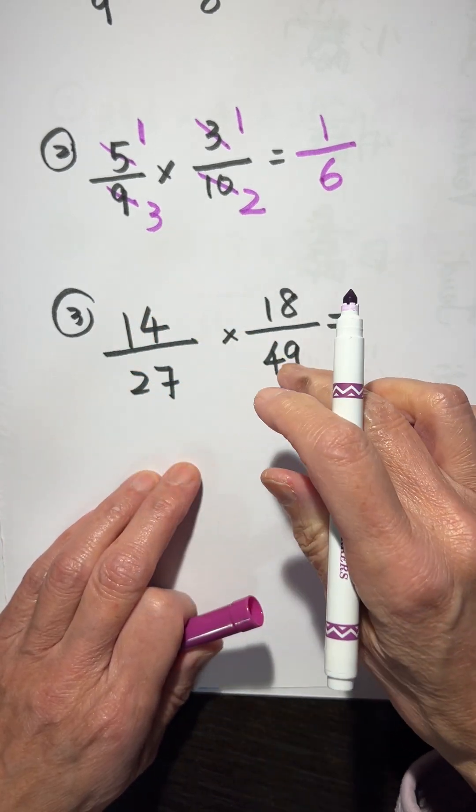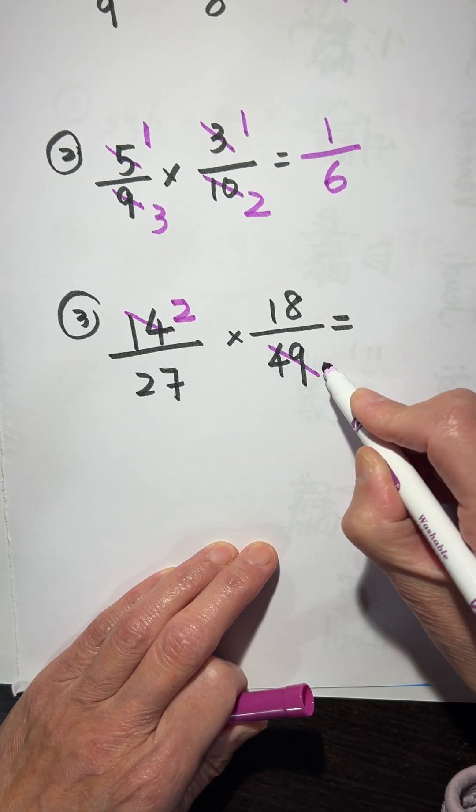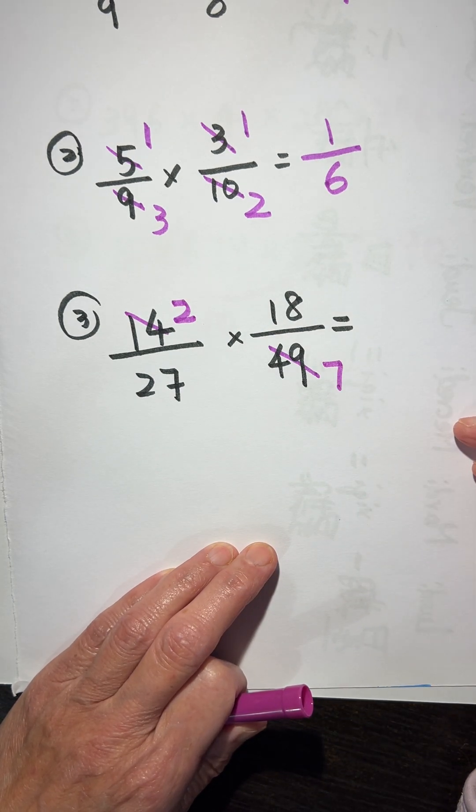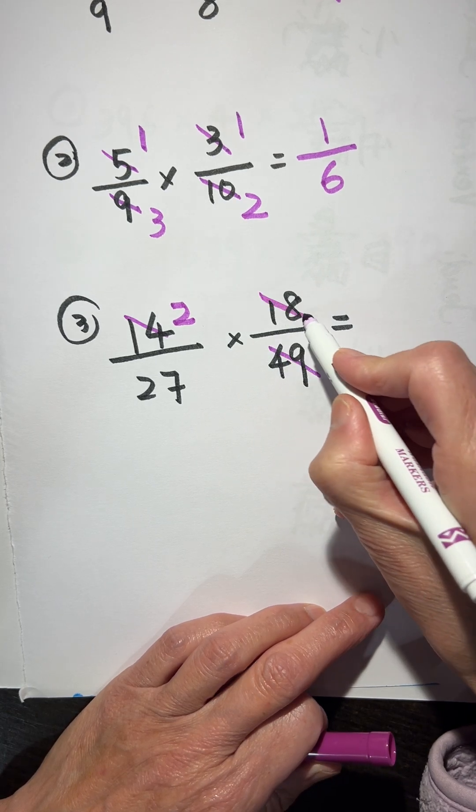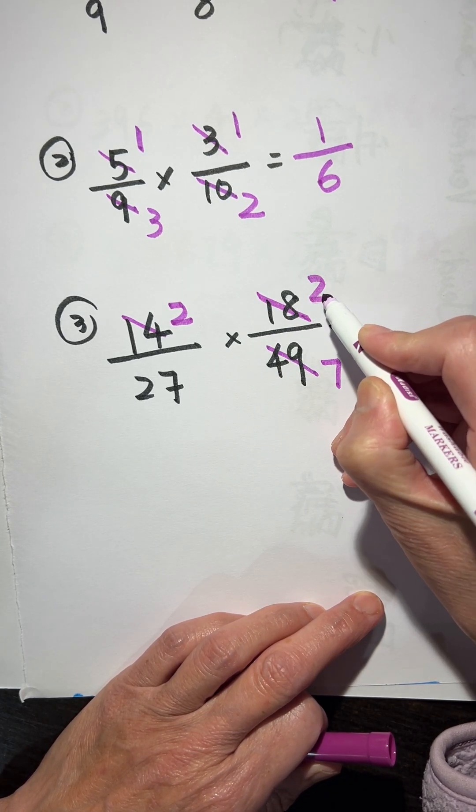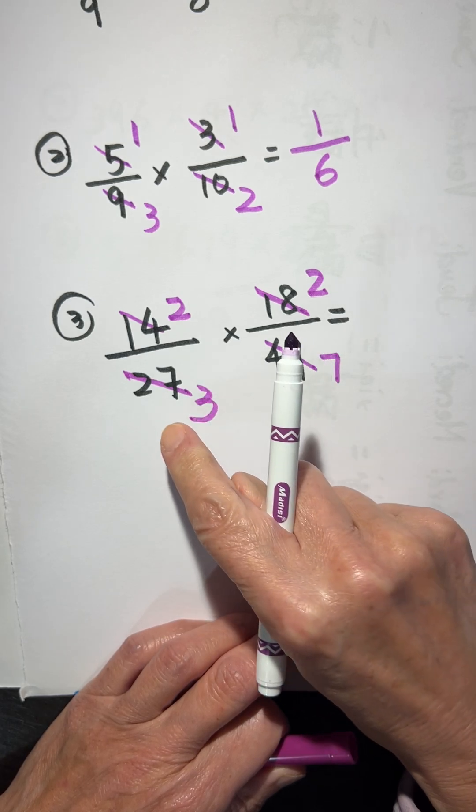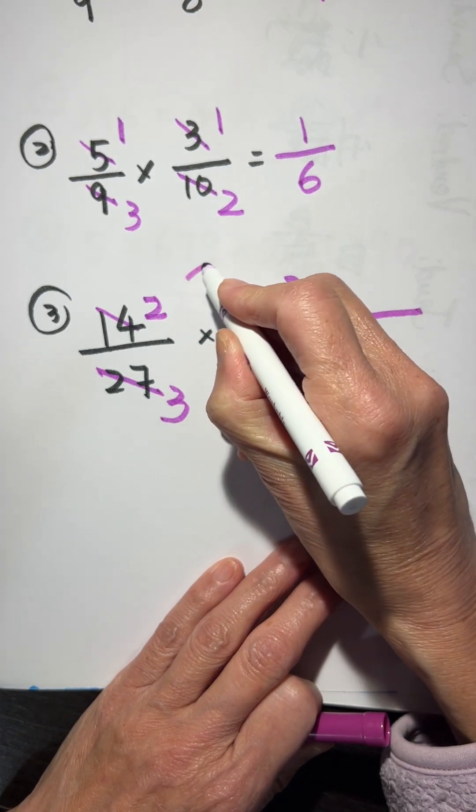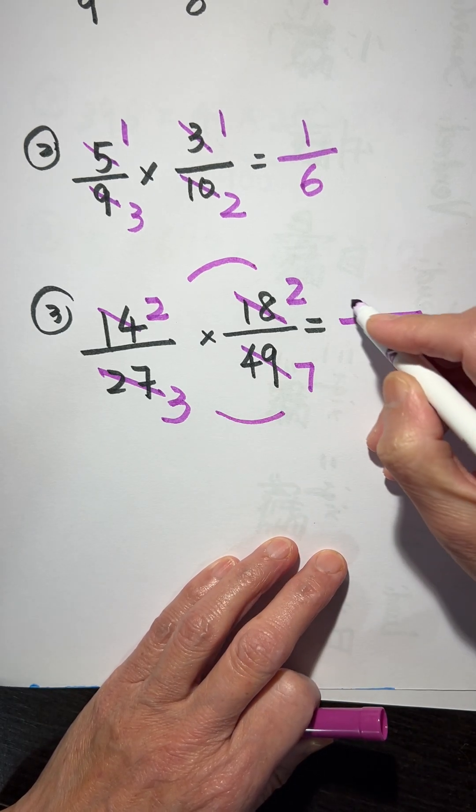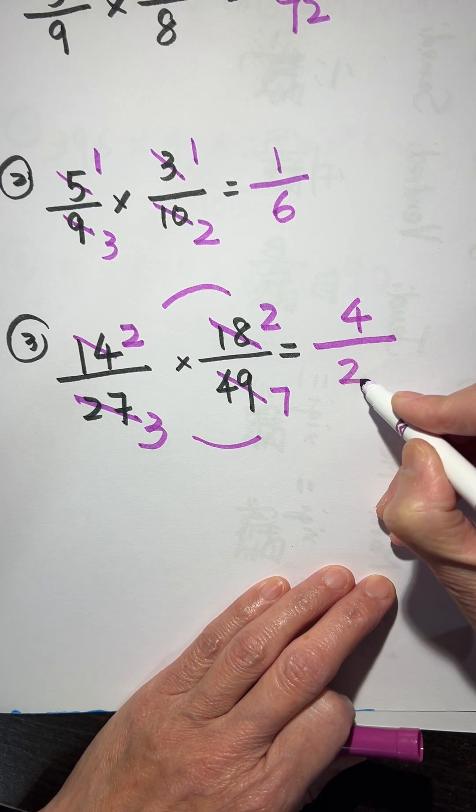So this one, they are both the multiple of 7. 2, 7. 7, 7. And this, they are both the multiple of 9. 2 times 9, 18. 3 times 9, 27. Now, we do the multiplication. 4 over 21.